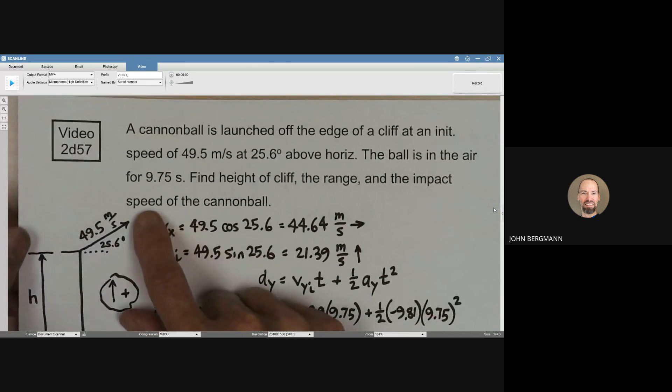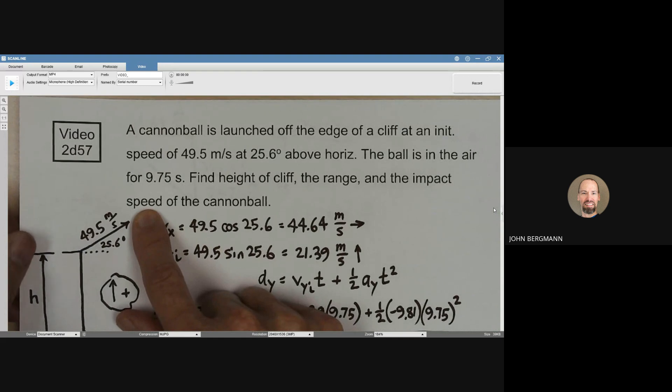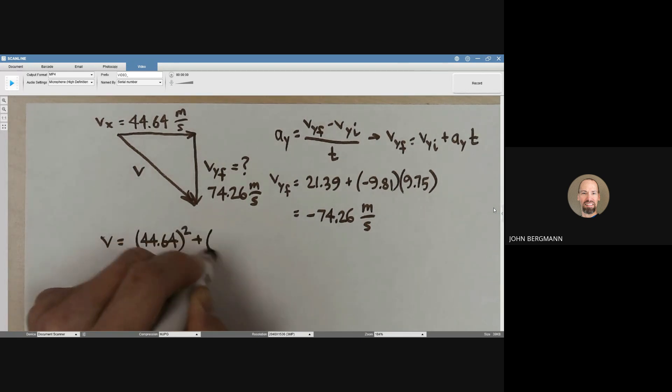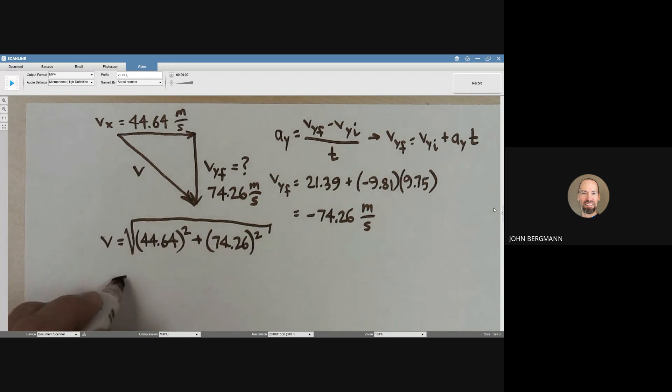We're asked to find just the speed, so we only need to use the Pythagorean theorem here. We don't have to use the inverse tangent function. So Vy, I'll go ahead and show the workout here, even though I trust that you can do it on your own. I'm going to square both of those legs of the triangle, take the square root, and when you do that to three significant figures, you get 86.6 meters per second. That's the impact speed that this cannonball is going to hit at.